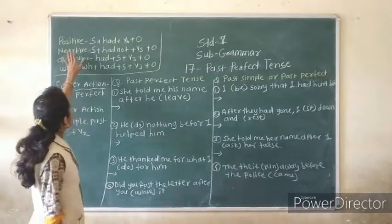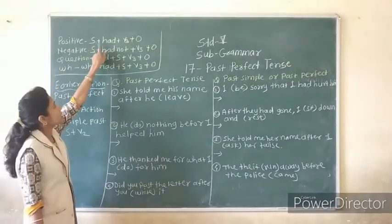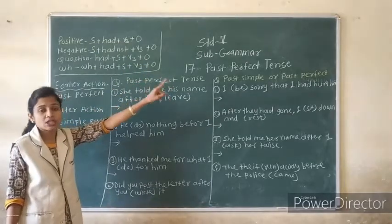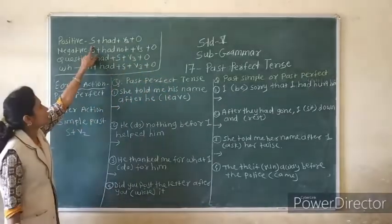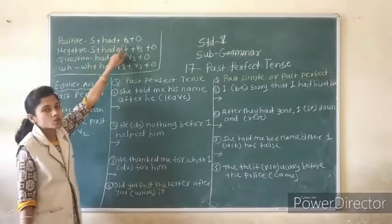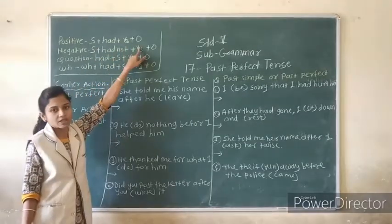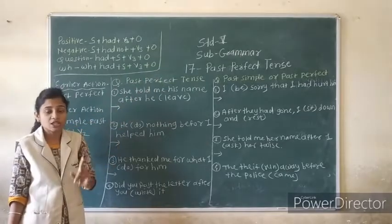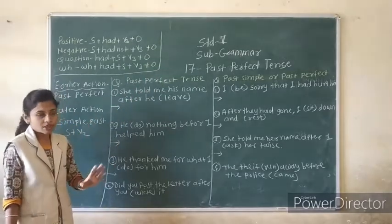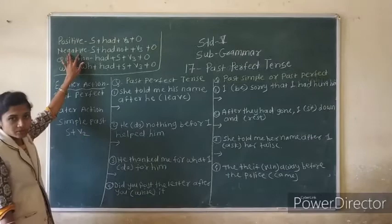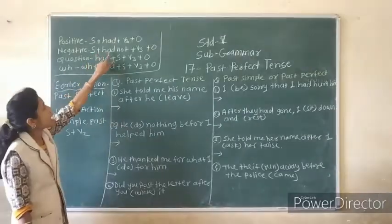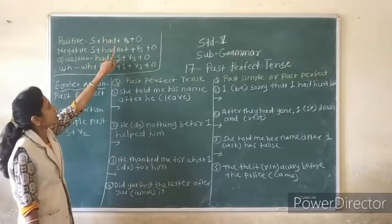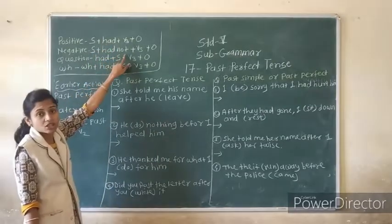For the positive statement we use: Subject plus Had. In the past perfect case we use Had. So the formula is: Subject plus Had plus verb 3 plus Object. Object means the remaining part of the sentence. For the negative statement: Subject plus Had Not plus verb 3 plus Object.